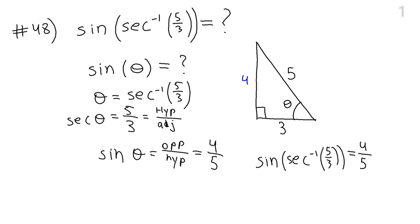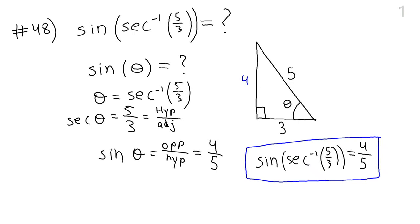No calculator was needed — all we did was draw a triangle and look at the ratios of the sides. Whenever you compose a trig function with an inverse trig function, always remember the domains and ranges of the inverse trig functions and ask yourself: is my answer supposed to be a ratio or an angle? In this example the final answer was a ratio, and although we used angle theta in our computations, we did not actually need to know what that angle theta is.